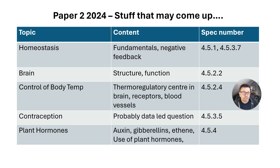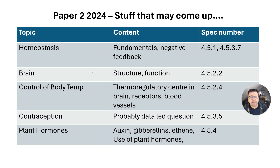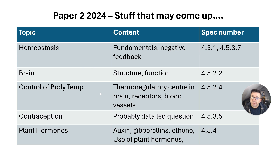Paper two: there was quite a bit on the nervous system and insulin, but nothing on the fundamentals of homeostasis — so negative feedback loops, for example. Nothing on the brain and nothing on control of temperature. Those would be worth learning. Body temperature control is definitely one for a four, five, or six mark question.